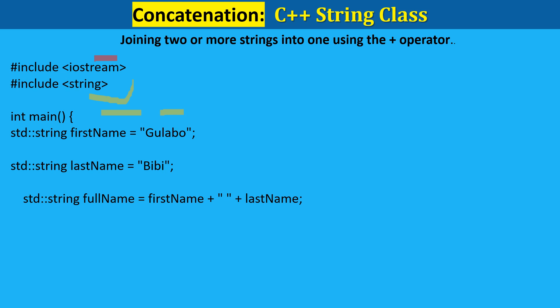Declare and initialize the last name: string last_name = "bb". This line creates another string variable named last_name and initializes it with the value "bb". Then for step 3, concatenation: first_name + " " + last_name. Here we create a new string variable full_name. The plus operator is used to concatenate first_name, a space, and last_name. After the operation, full_name contains the value "gulab bb" as expected.